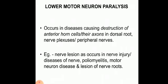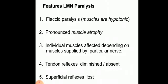Now we move to the lower motor neuron. The extent of the lower motor neuron is from the anterior horn cells of the spinal cord to the particular muscles which the lower motor neurons supply. Lower motor neuron paralysis occurs in diseases which cause destruction of the anterior horn cells or their axons in the dorsal root, nerve plexus, or peripheral nerves. Examples include nerve lesions from nerve injury, diseases of the nerves, poliomyelitis, motor neuron diseases, or lesions of the nerve roots. The features of LMN paralysis are listed in nine points. First, flaccid paralysis where the muscles are hypotonic.